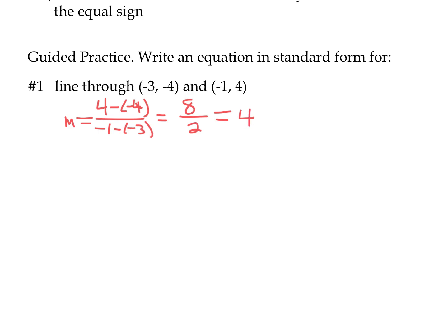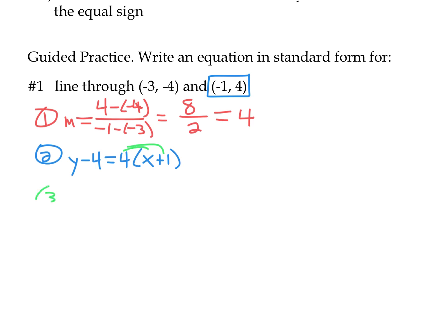Once we have the slope, we write point-slope form. I'll pick the second point, so I have y minus 4 equals 4 times the quantity x minus negative 1. That's step two: point-slope form. Step three is to simplify — distribute into the parentheses to get y minus 4 equals 4x plus 4. Then I add 4 to both sides to get y by itself: y equals 4x plus 8.